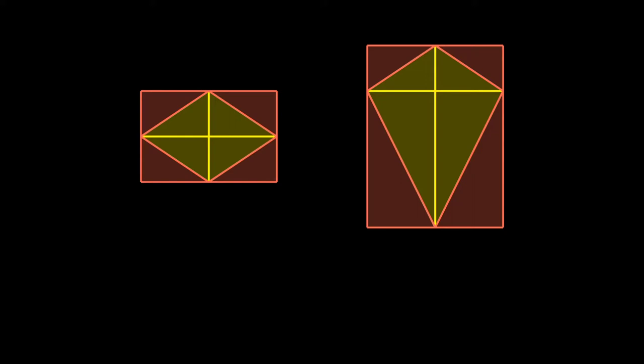And so if we give these rectangles some dimensions like x along the bottom and y going vertical, then the area of our original shape must be half of the rectangle, which is half of xy.